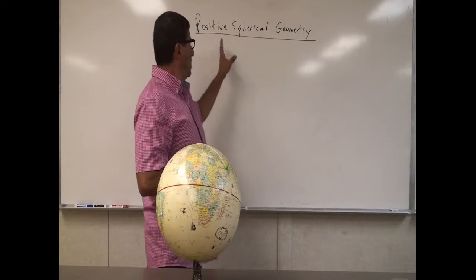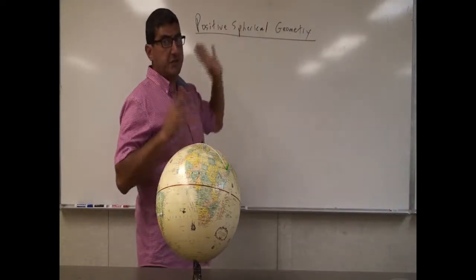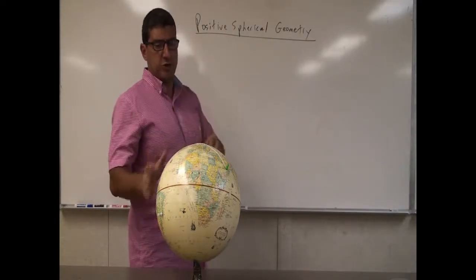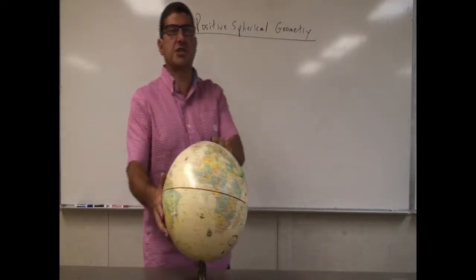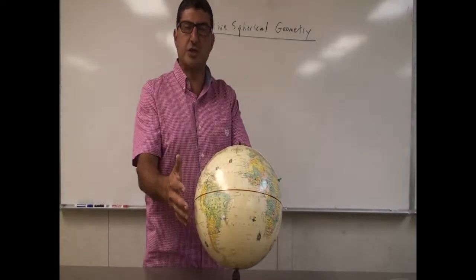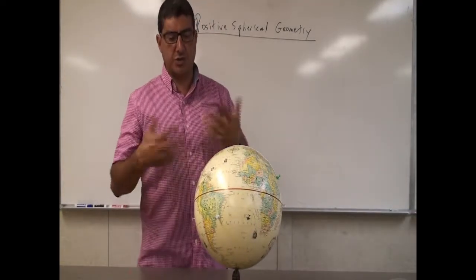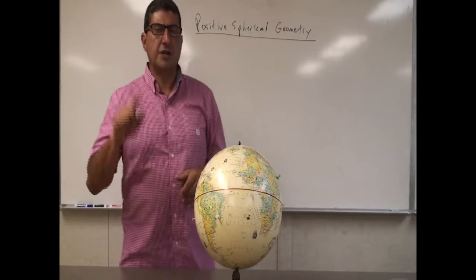Positive Spherical Geometry is a different kind of geometry, and we can use the surface of a globe — the surface of the Earth or any other globe — to illustrate its properties.